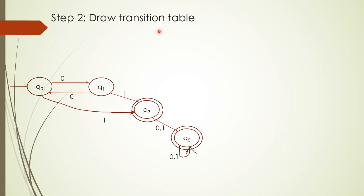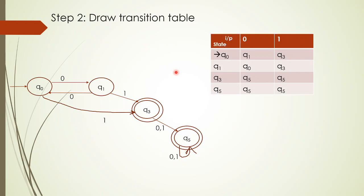After removing the unreachable states, we draw the transition table for the remaining states. The transition table has Q0, Q1, Q3, and Q5. For input symbols 0 and 1: Q0 transitions to Q1 and Q1; Q1 transitions to Q3; and Q5 transitions to Q1 on input 0 and Q5 on input 1.